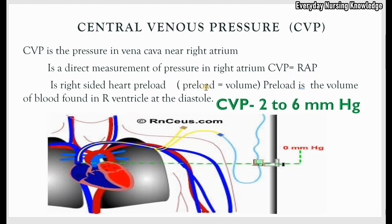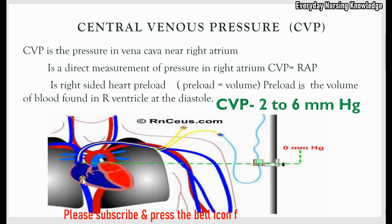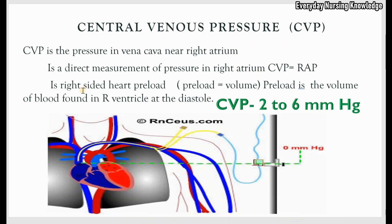What is preload? The term preload refers to volume. The blood in the right atrium flows through the right ventricle when the tricuspid valve opens, and this happens at ventricular diastole. So the preload is the volume of blood found in the right ventricle at diastole. CVP gives measurement of right atrial pressure as well as right-sided heart preload.